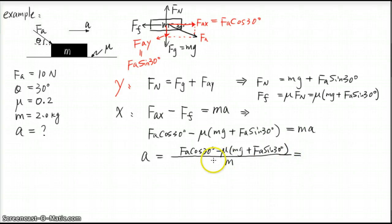Then you can plug in all the numbers and calculate. So the answer is 1.87 meters per second squared. Done.